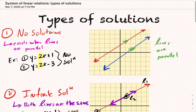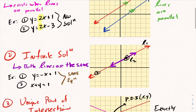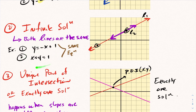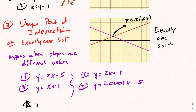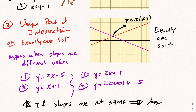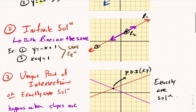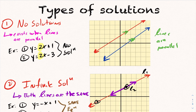To summarize: option 1 is no solution — parallel lines. Option 2 is infinite solution — the exact same line, sometimes written differently to trick you. And the final option is the unique solution, or exactly one solution, which happens when the two linear equations have slopes that are not the same. If the slopes are not the same, that implies a unique solution. These are the three types of solutions you can get with a system of linear relations.